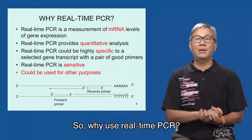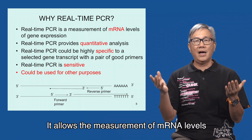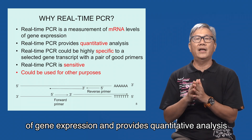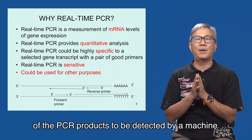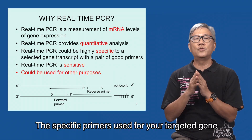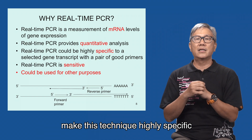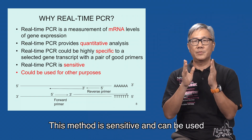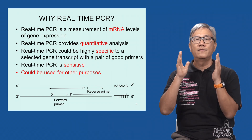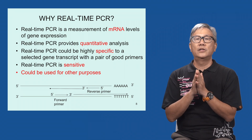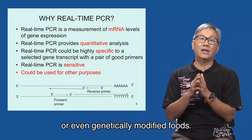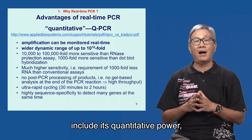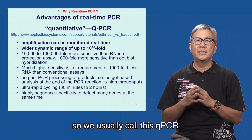So, why use real-time PCR? It allows the measurement of mRNA levels of gene expression and provides quantitative analysis of the PCR product to be detected by a machine. The specific primers used for your target gene make this technique highly specific to your gene of interest. This method is sensitive and can be used for other purposes — for example, to detect pathogens or even genetically modified foods. The advantages of real-time PCR include its quantitative power, so we usually call this qPCR.